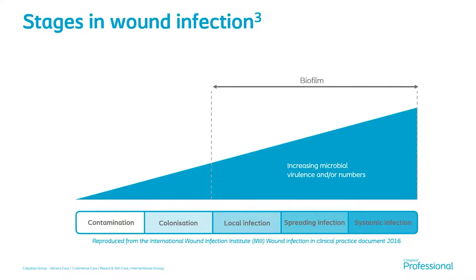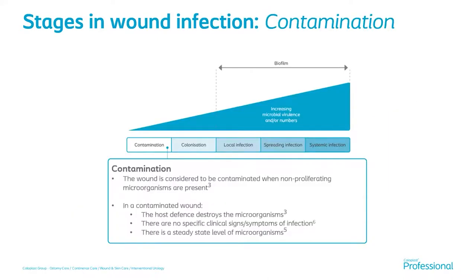Looking at the wound infection continuum, you can see that it runs from contamination right the way through to systemic infection. Starting with contamination: a wound is considered contaminated when there are non-proliferating microorganisms present. This would be a normal wound showing signs of healing, but with microorganisms in the wound bed that are not causing any problem with the host's response.